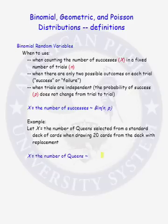In this lesson we will talk about three commonly used discrete probability distributions. These three distributions are the binomial, the geometric, and the Poisson distributions.